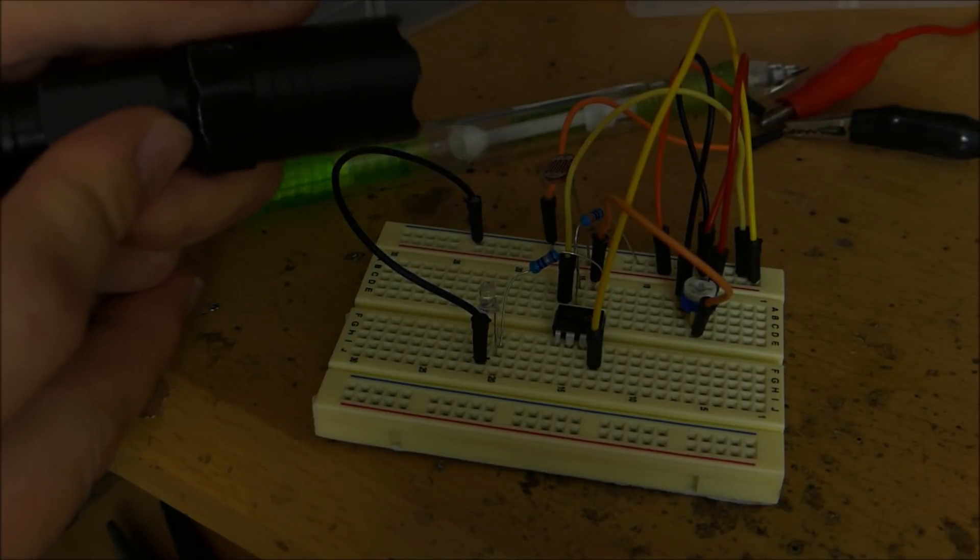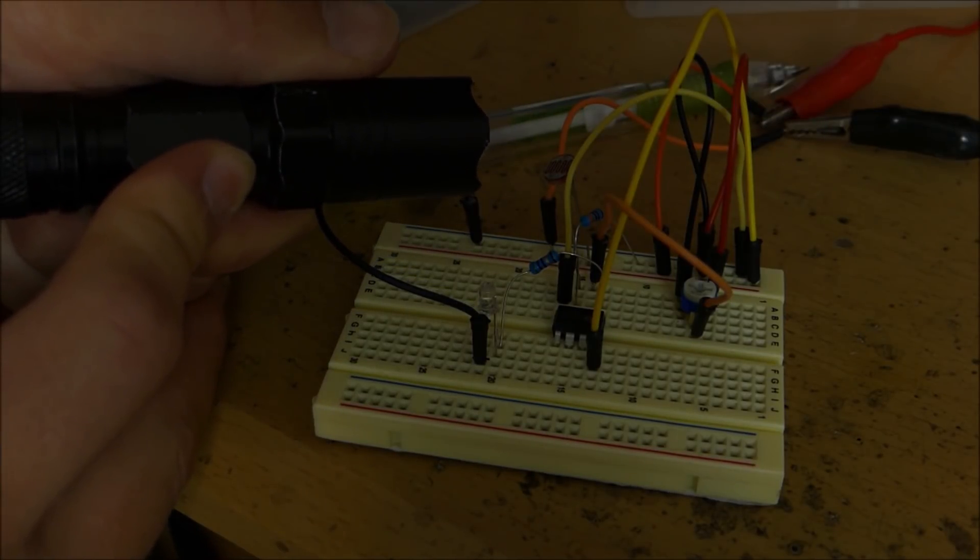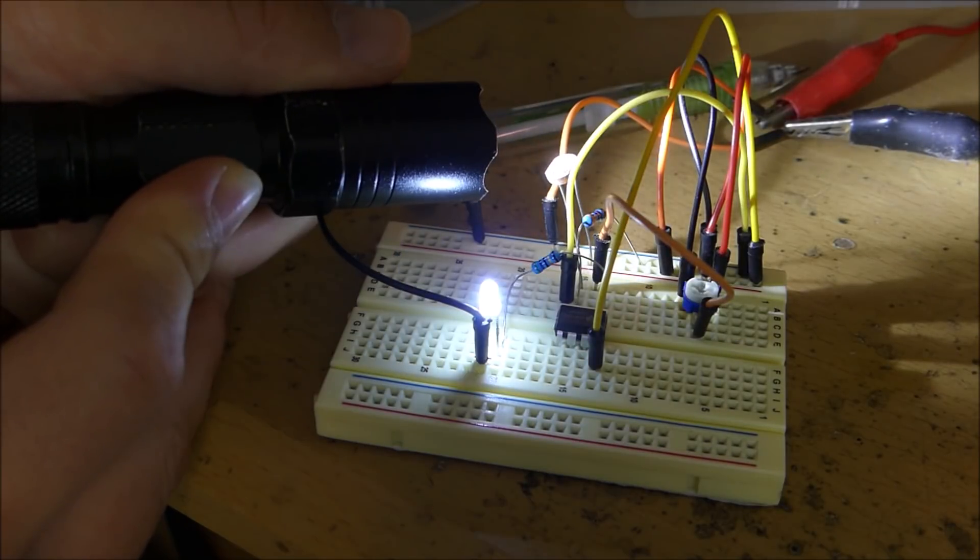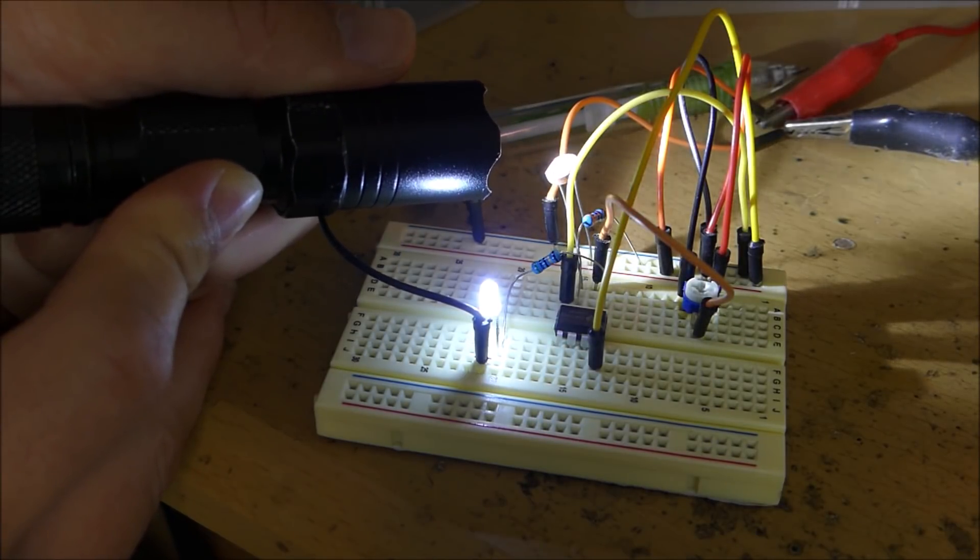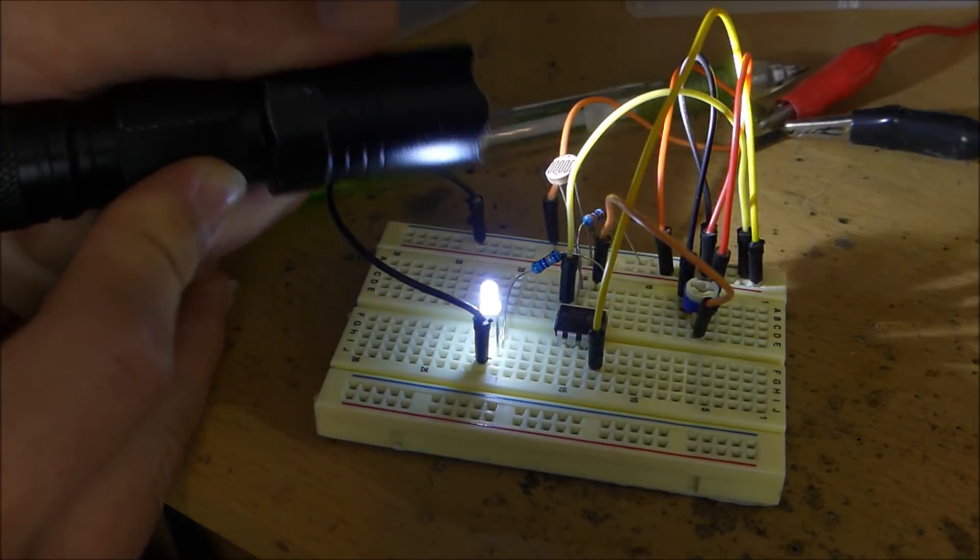So you can see that our comparator circuit is working. When this light is shown on the sensor, the LED turns on. The light's taken off the sensor, the LED turns off, and so on.